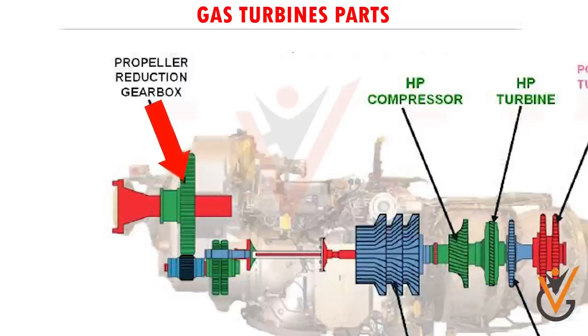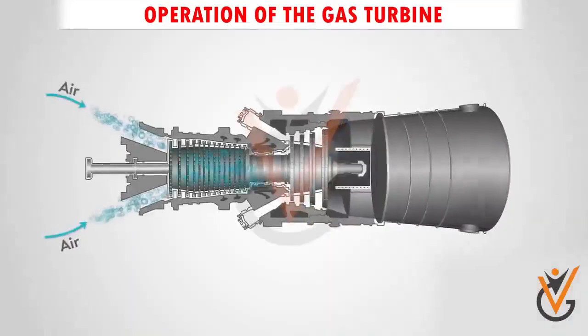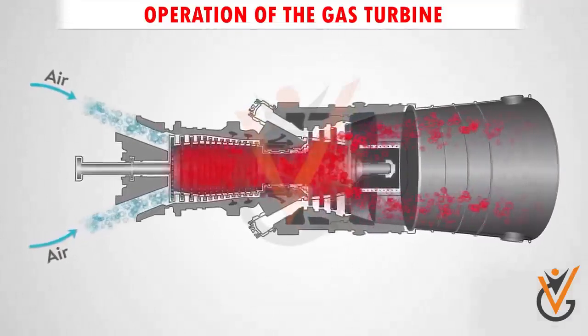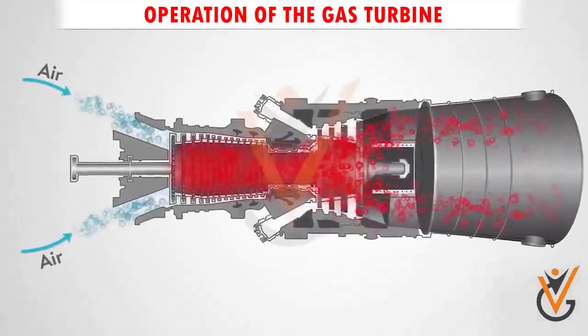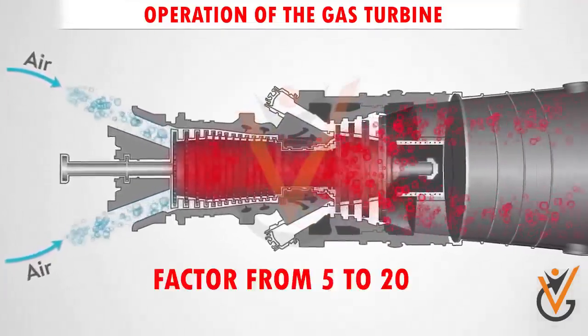In operation, the compressor raises the pressure of air taken from the atmosphere by a factor of 5 to 20.